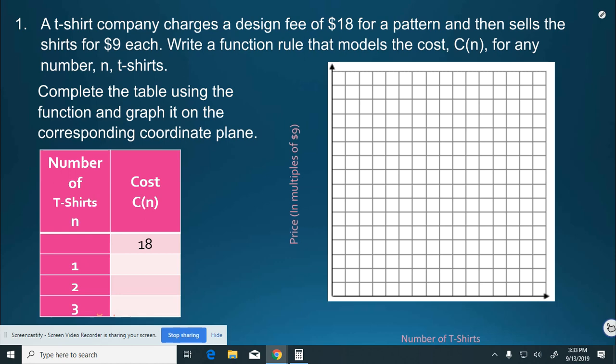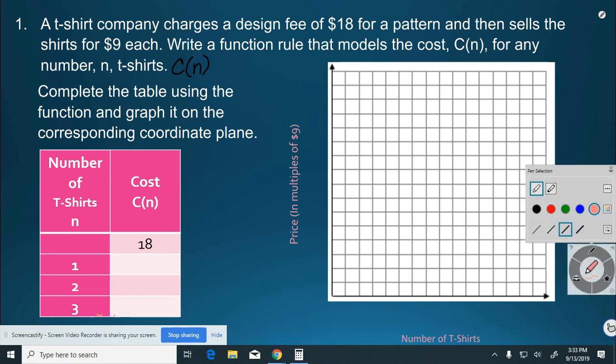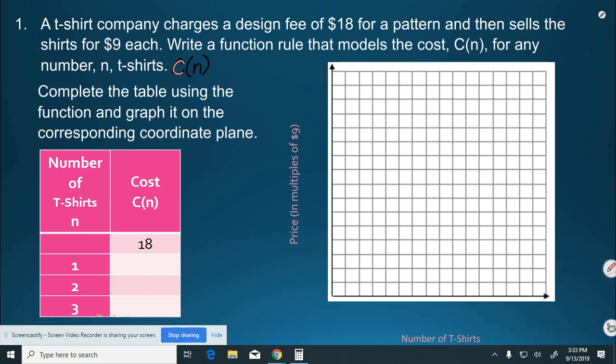Similar to yesterday, we want to write our function and we have that the cost is going to be C(n) again. Let me change my color. So, C(n).